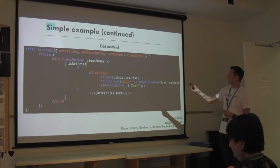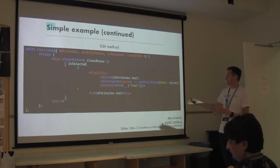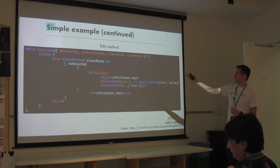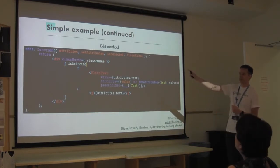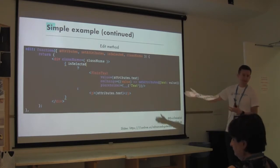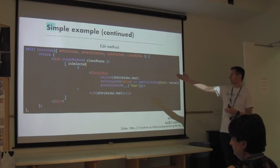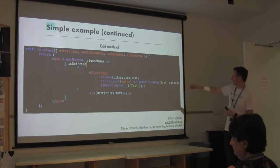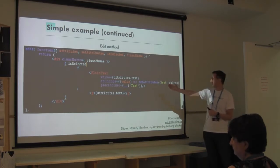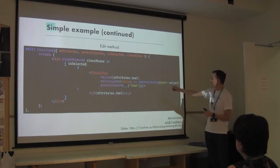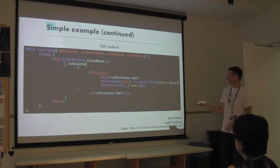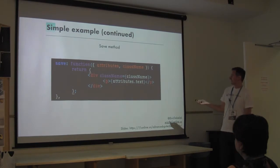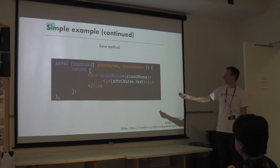Here's our edit method - pretty simple, this is React. You have some built-in stuff passed in as parameters. We have this simple method: is this selected? If it is, we're going to show one of the built-in plain text inputs. If it's not selected, we'll just show a p-tag with the text. The plain text method has an onChange which uses the built-in setAttributes to change the attribute. Then the save method - remember, this is what saves your HTML. Very simple: save a p-tag with your text.